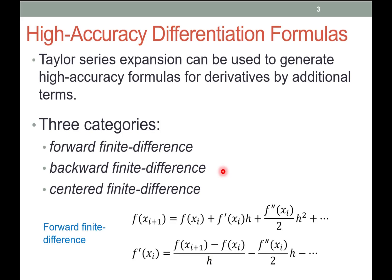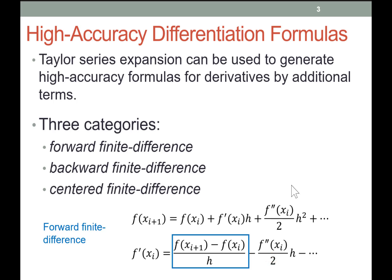Just like before, we saw the forward, backward, and centered finite differences, and what we focused on was just the first term. What we're going to do in this lecture is find more accurate formulas by adding the derivatives we see in the Taylor series.